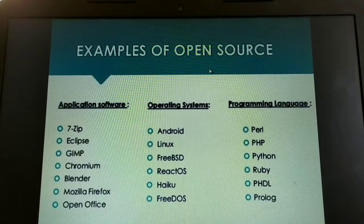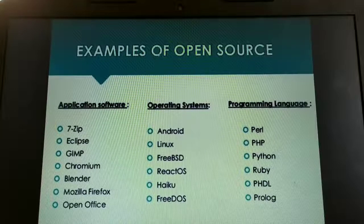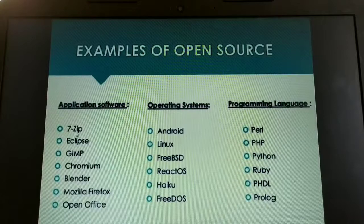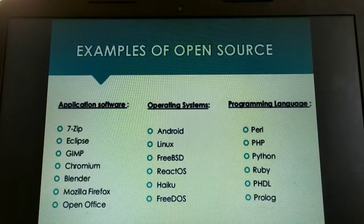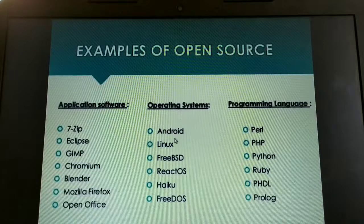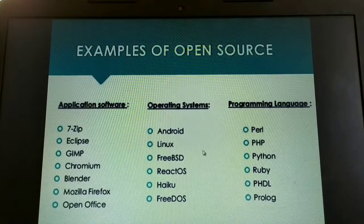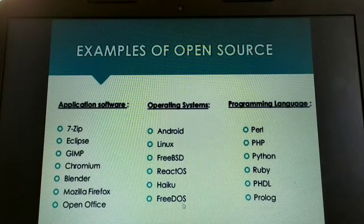Developers may charge in the name of development or support of software. Certain examples of open source software based on application software include 7-Zip, Eclipse, GIMP, Chromium, Blender, Mozilla Firefox. Open source software also includes operating systems: Android is an open source software which may be completely free or may require a minimal payable amount to developers. Other examples include Linux, FreeBSD, ReactOS, Haiku, and FreeDOS. Certain programming languages may also come as open source.